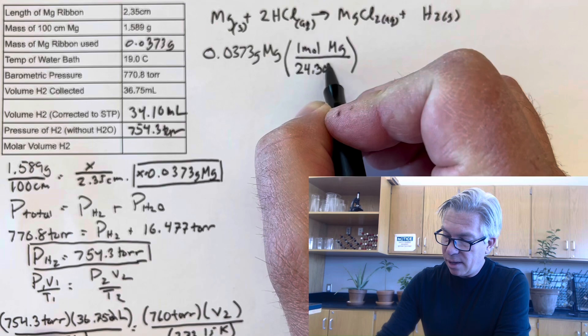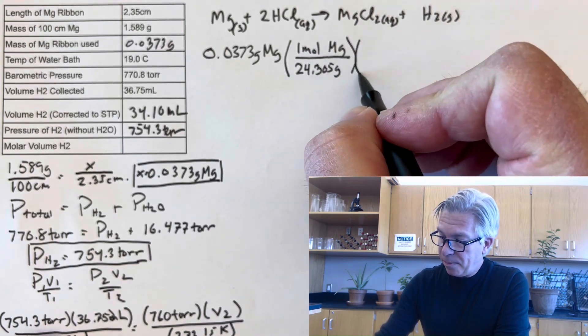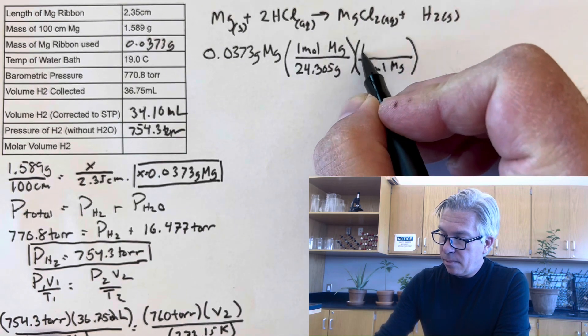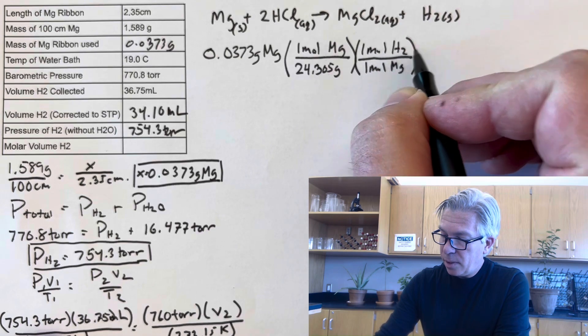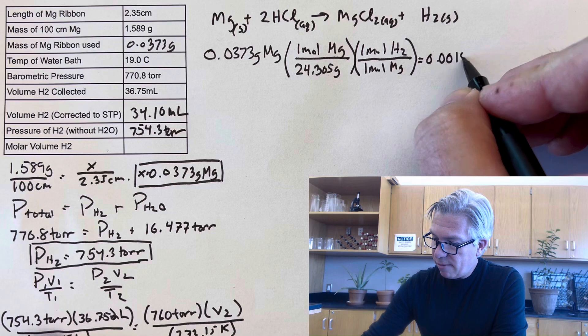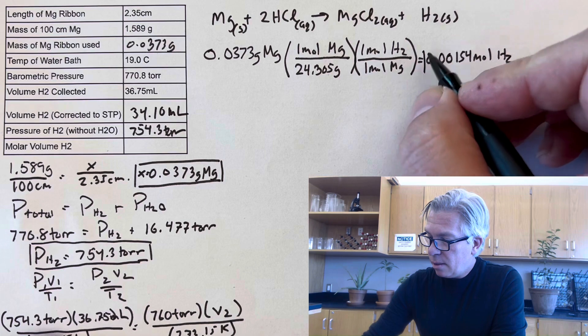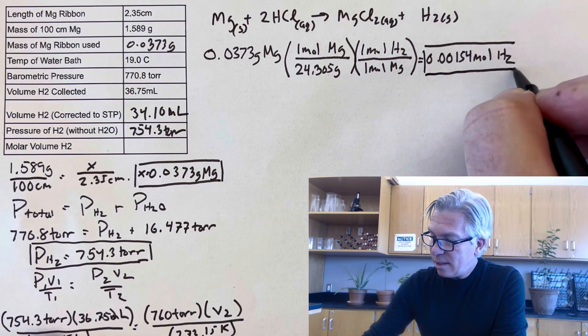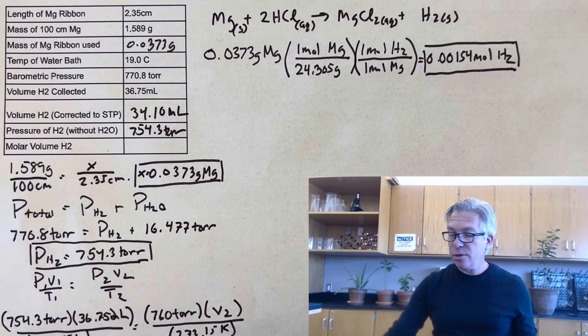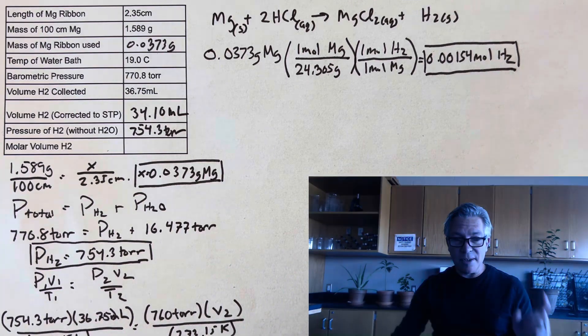0.0373 grams of magnesium was used. And whenever you do stoichiometry, the first thing you want to do is make sure you get to moles. So 24.305 grams from the periodic table. That'll get me moles. And then you have to do a mole ratio, which gives me 0.00154 moles of hydrogen. So by doing this calculation inside my burette, my eudiometer, I produced, to the best of my knowledge, that many moles of hydrogen.